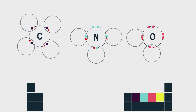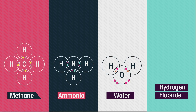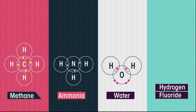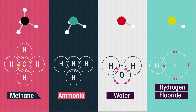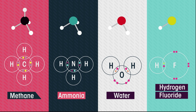We can draw the covalent bonding in these molecules using dot and cross diagrams. You should already have watched our video on dot and cross diagrams. Methane, ammonia, and water bond like this — you can also represent them using rings to show the orbitals. Can you draw a dot and cross diagram for hydrogen fluoride? Pause the video and have a go. Each structure contains four pairs of electrons that sit as far apart as possible. In methane, all four are in bonds, making methane tetrahedral in shape.